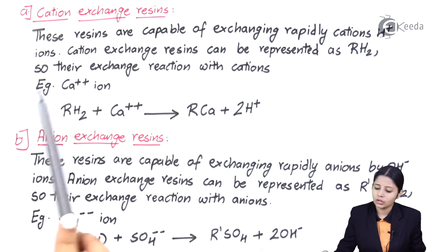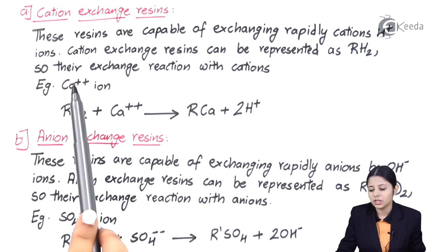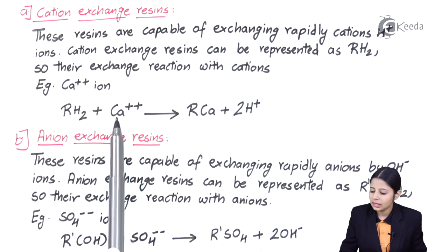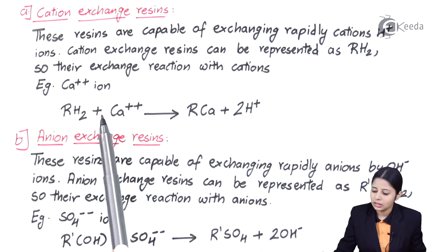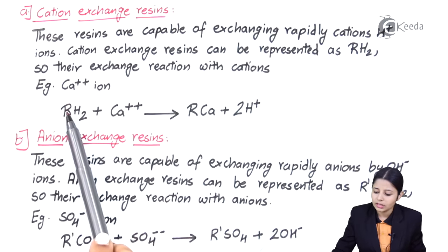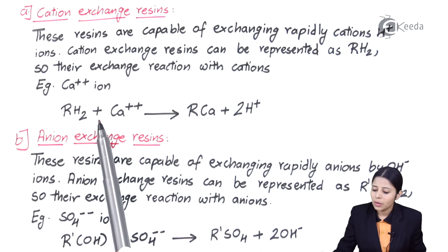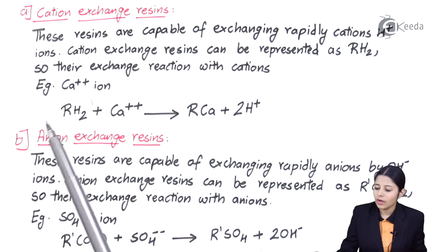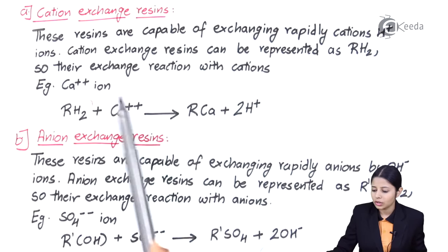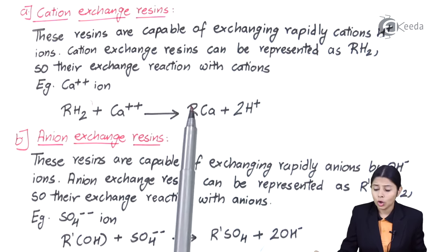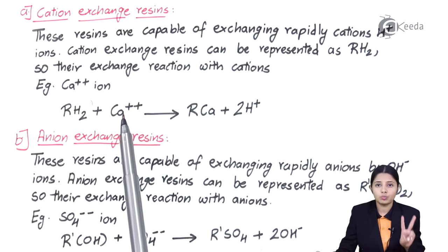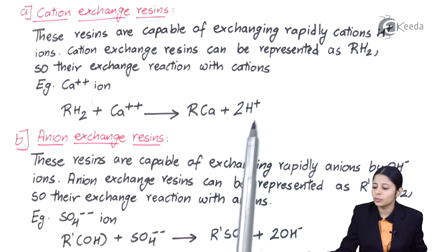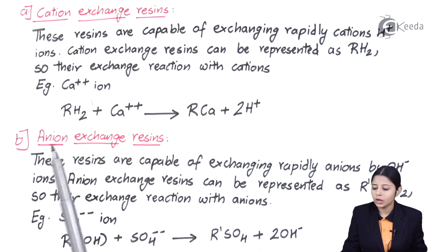Cation exchange resins can be represented as RH₂. Their exchange reaction with cations — for example, Ca²⁺ (valency of calcium is +2) — is: RH₂ + Ca²⁺ → RCa + 2H⁺. The Ca with two valencies goes and sticks with R forming RCa, and 2H⁺ ions are released. Not only are the elements on both sides balanced, but also the charges: Ca²⁺ is +2 positive and 2H⁺ is also +2 positive.